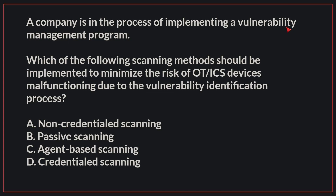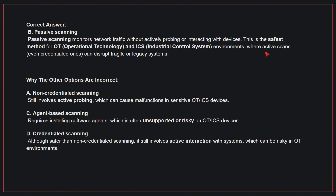The correct answer is B: Passive scanning. Passive scanning monitors network traffic without actively probing or interacting with devices. This is the safest method for OT and ICS environments where active scans can disrupt fragile or legacy systems.